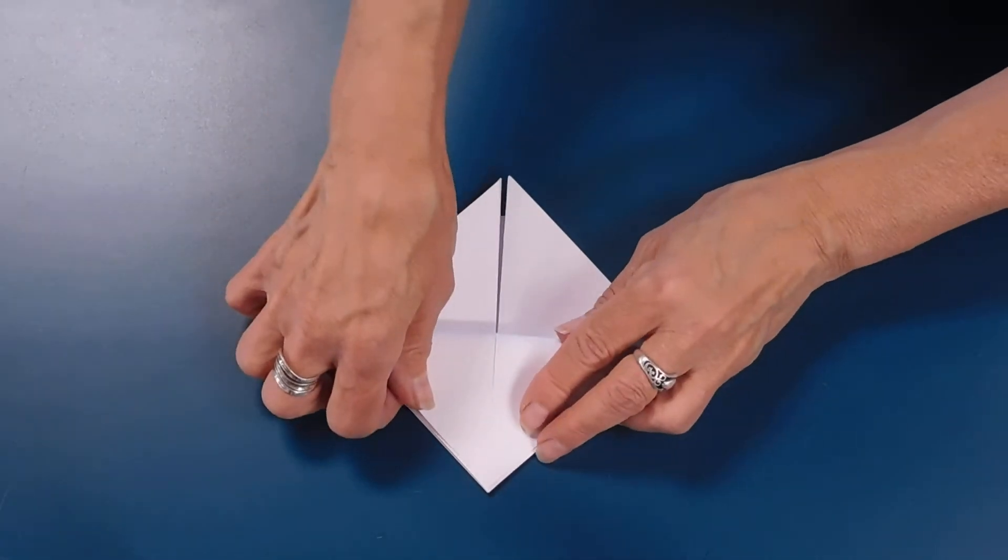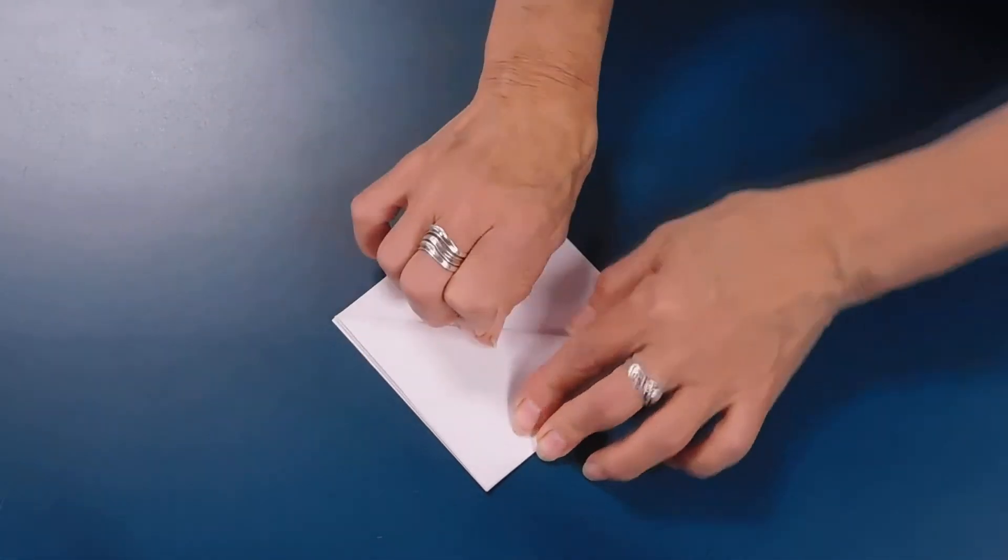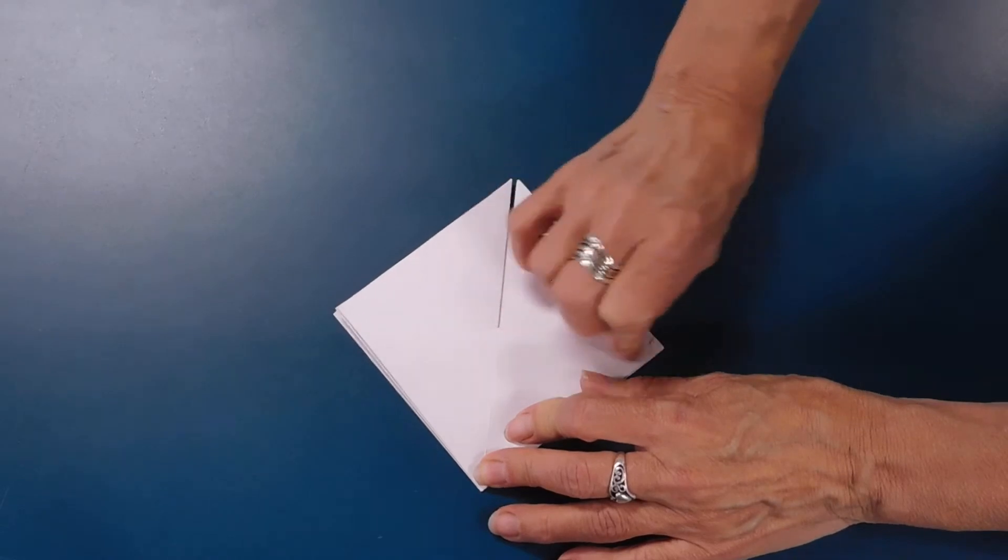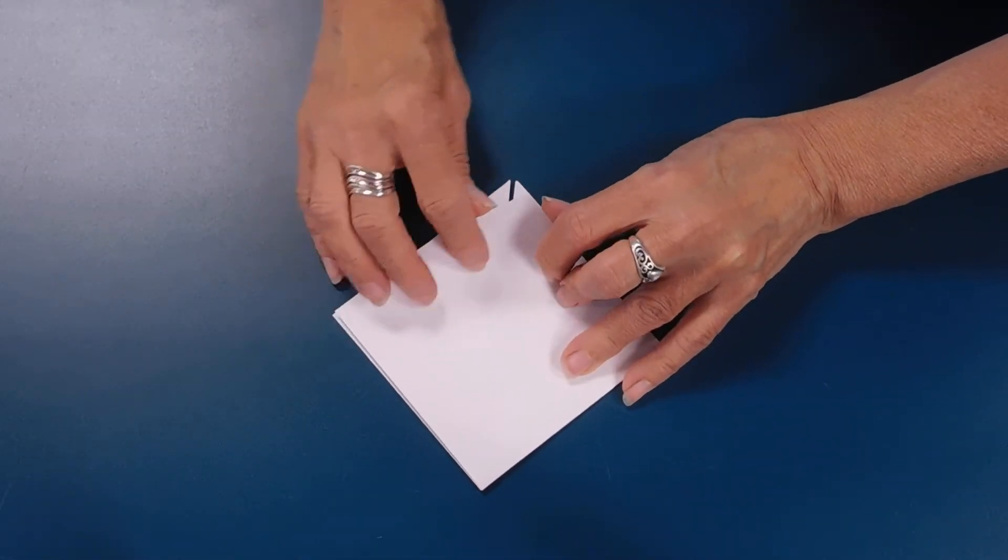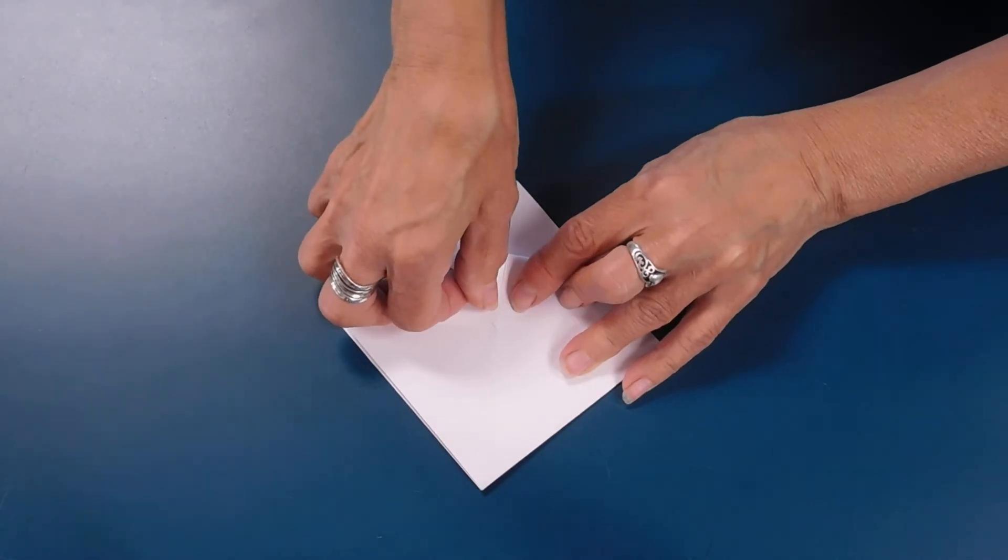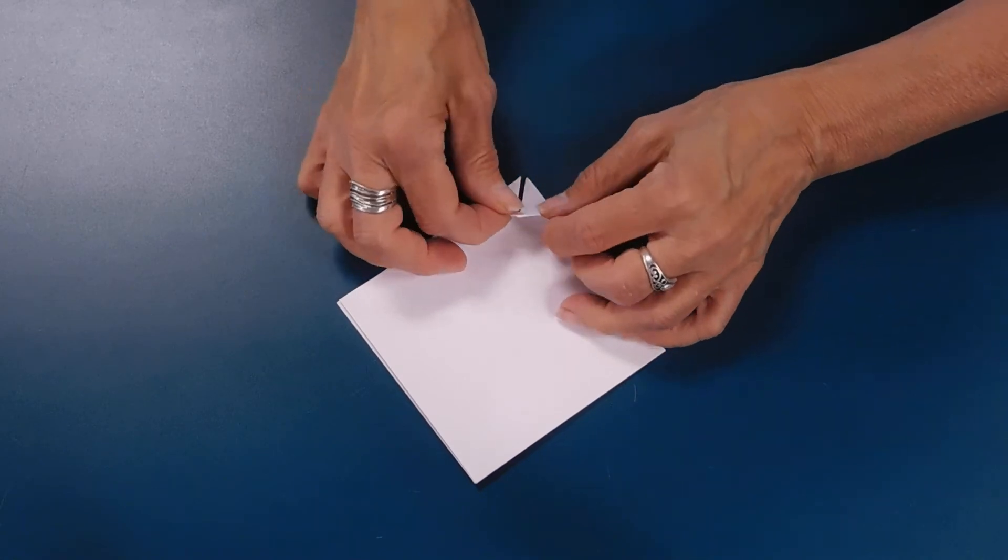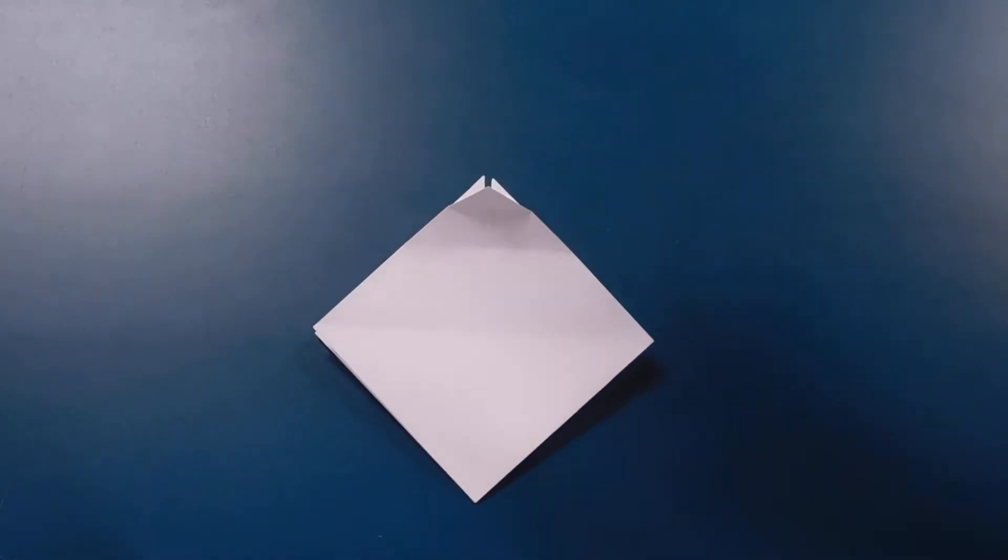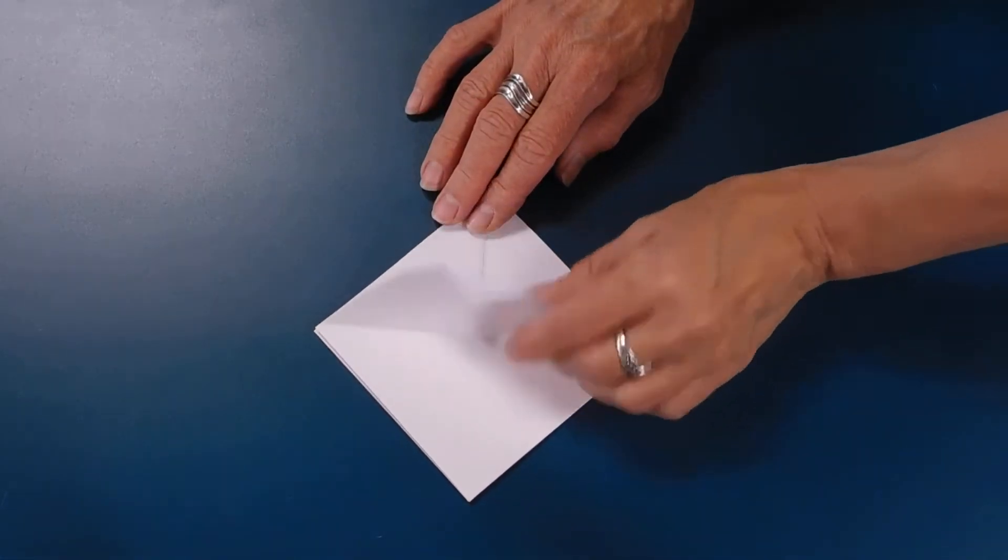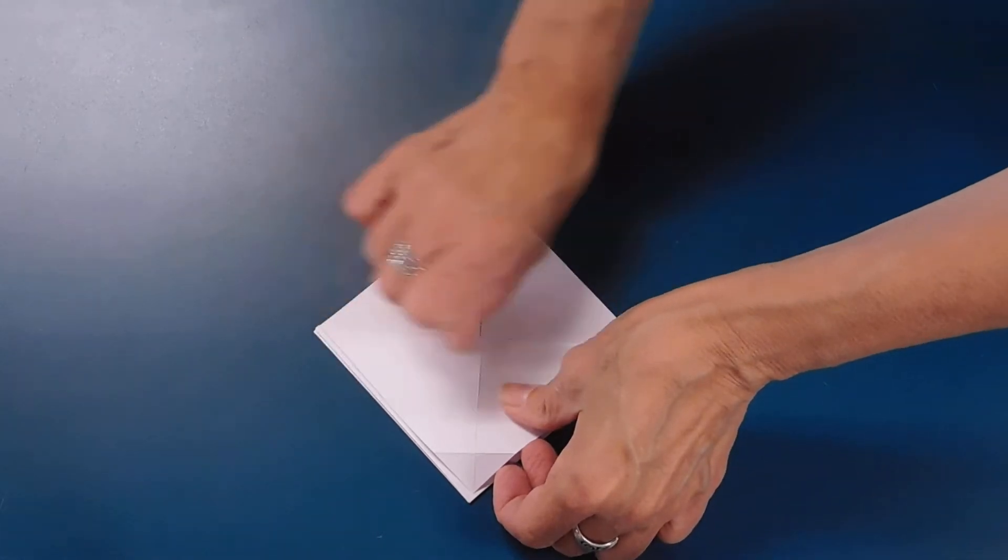So fold over the top point to the bottom point, crease well. Fold over the top point to that crease you just made. So all those folds I did, let's redo that one fold. So that's our original fold.